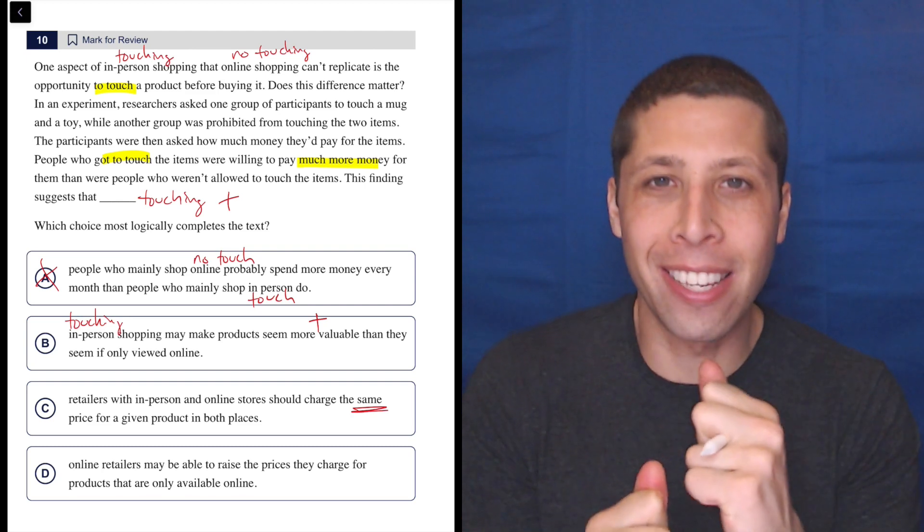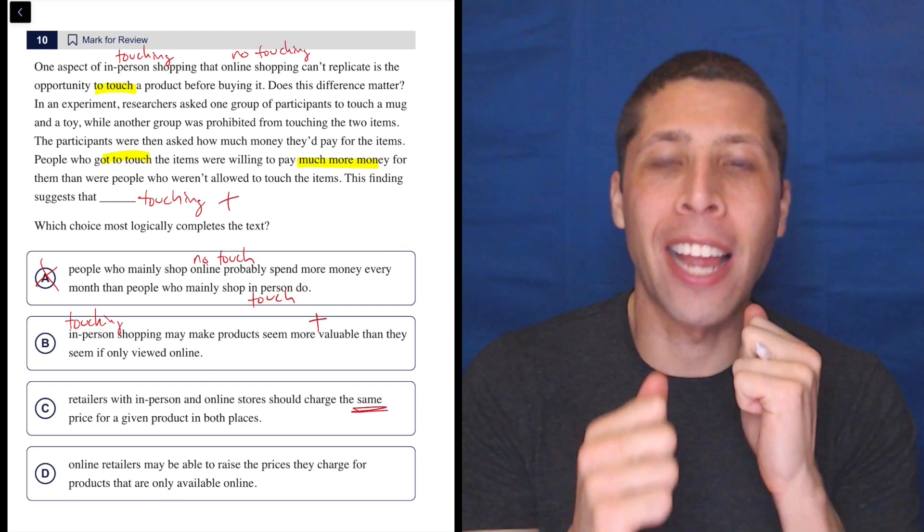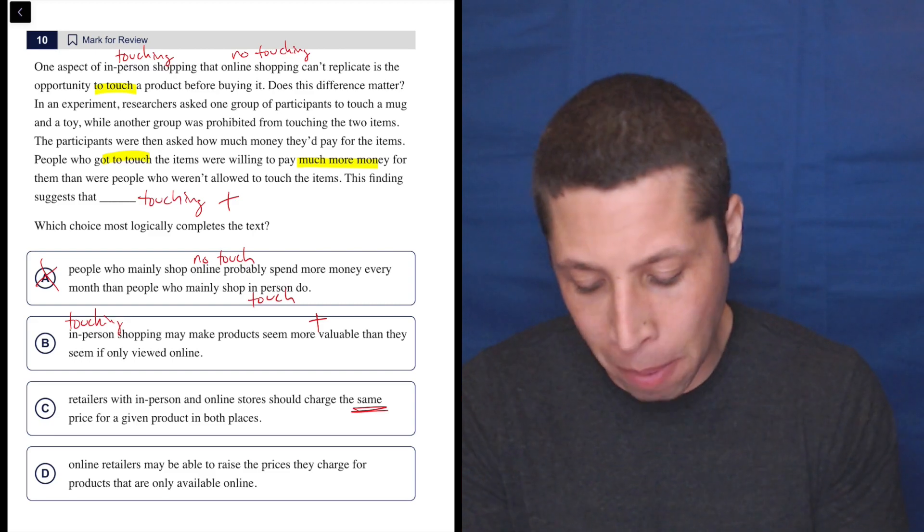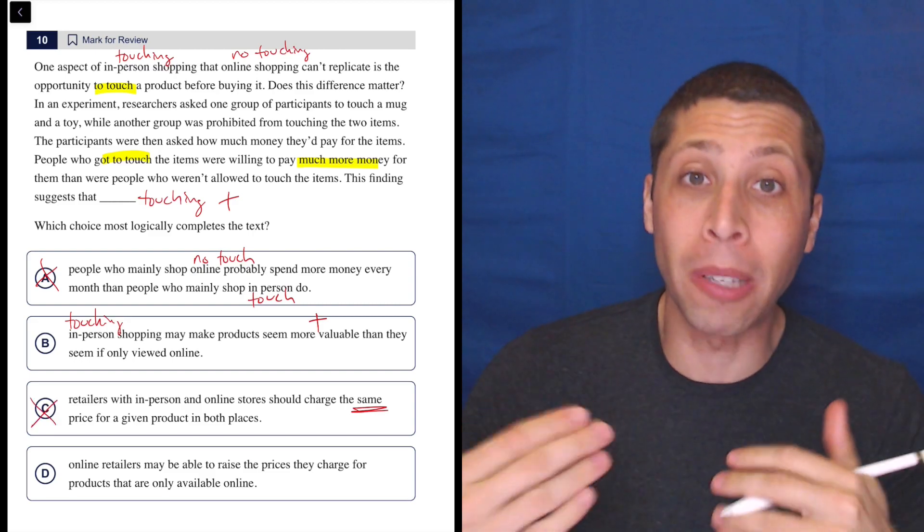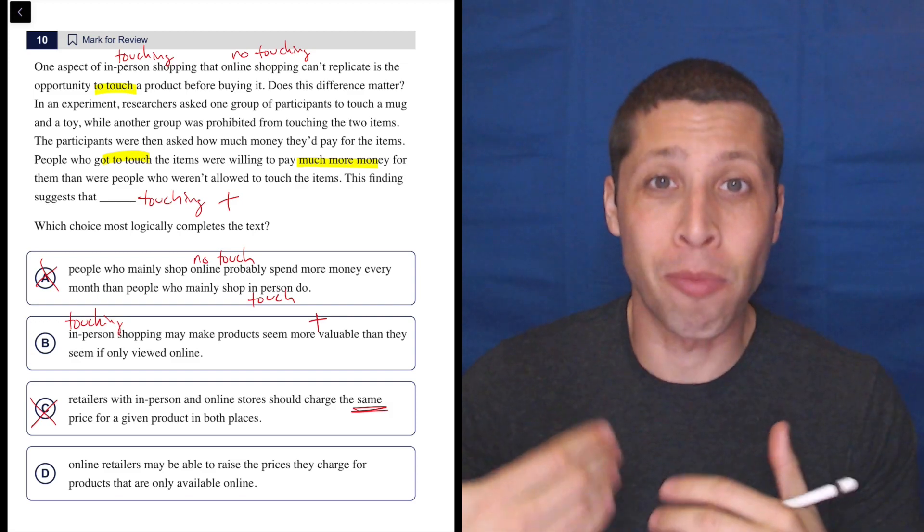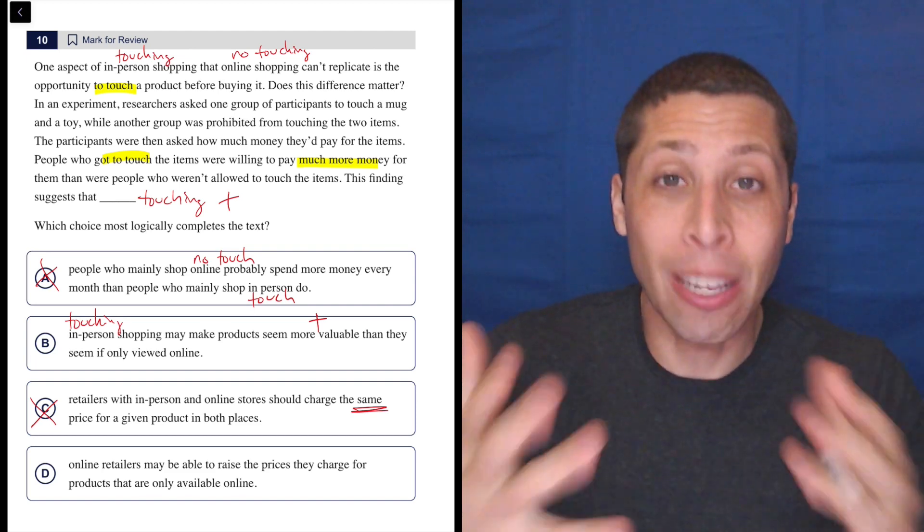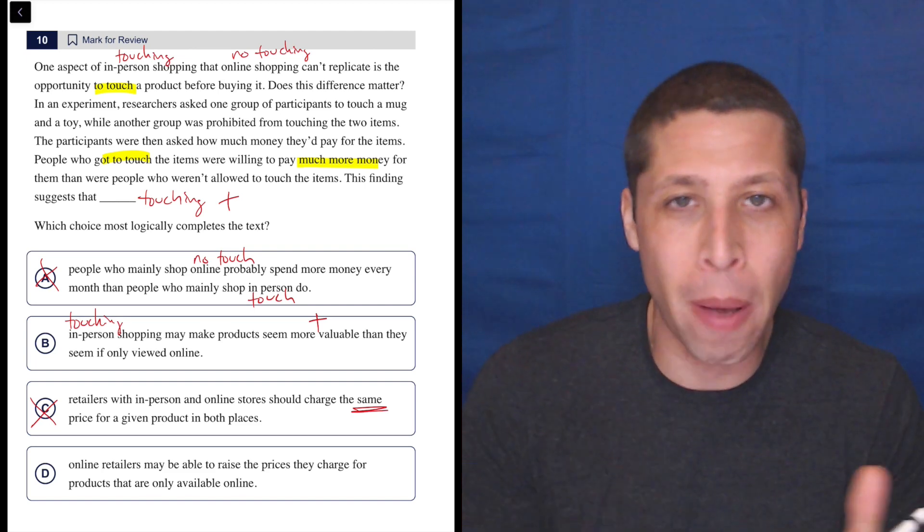The point of the passage is to compare online and in-person shopping. So if they're the same, then we're not making the same comparison that the passage was. We're trying to rank them, right? Normally, we think of ranking things as a red flag on these passages, but the whole point of this passage is that that's what we want. We want to rank them and say that one is better than the other.